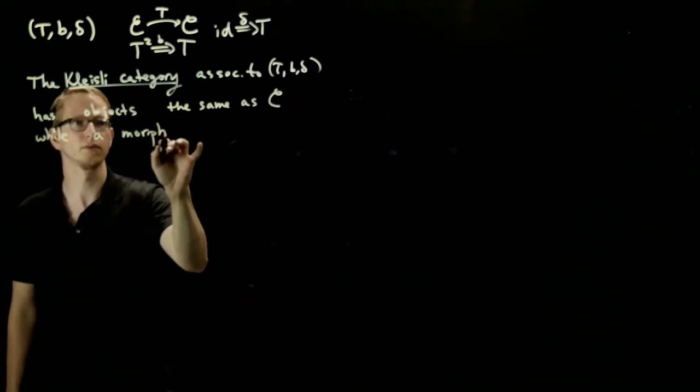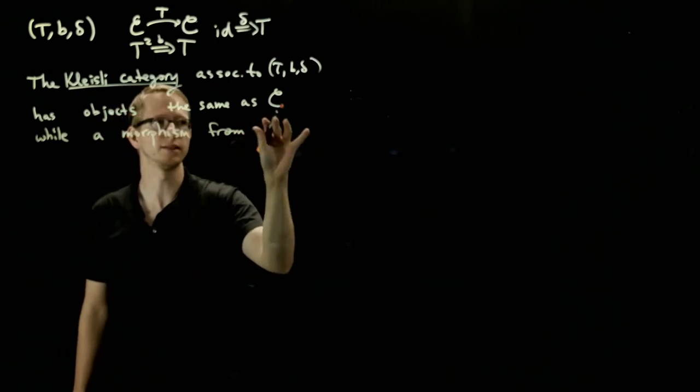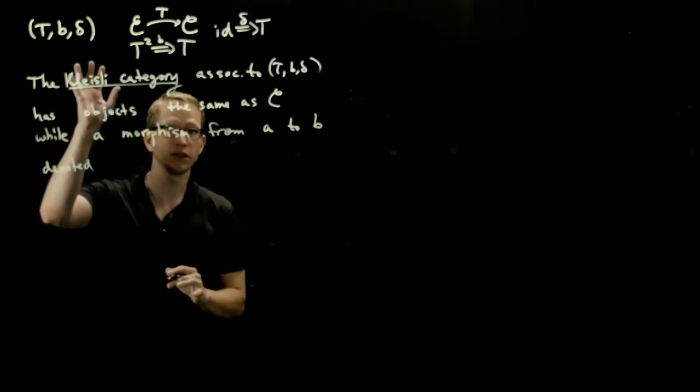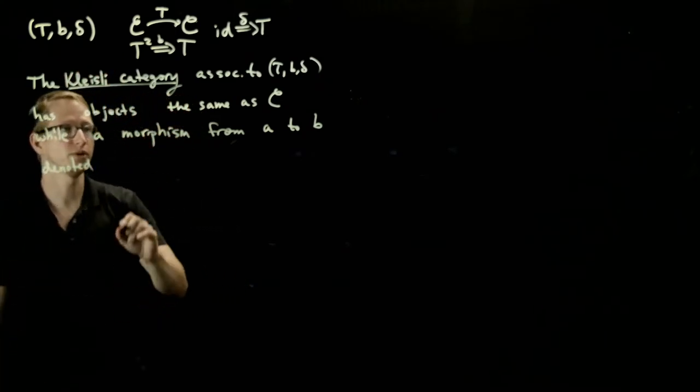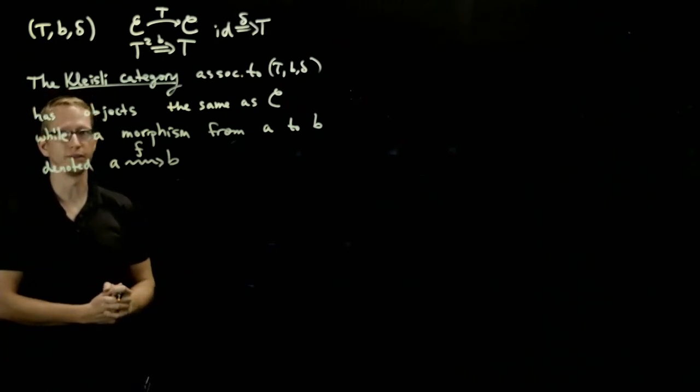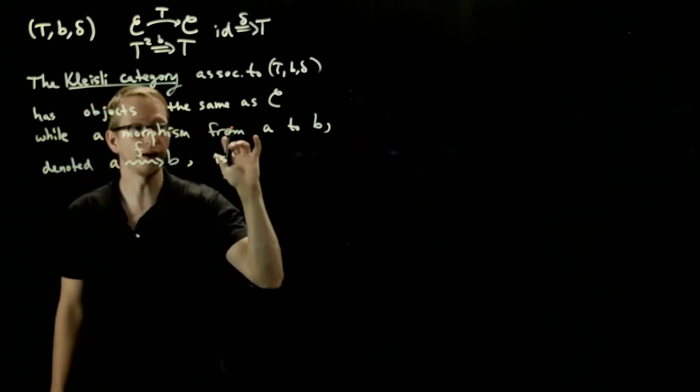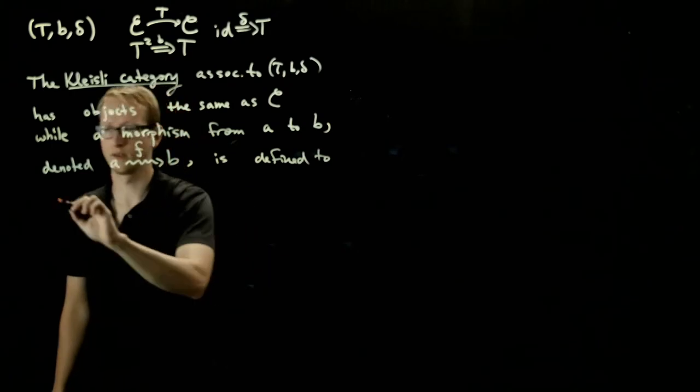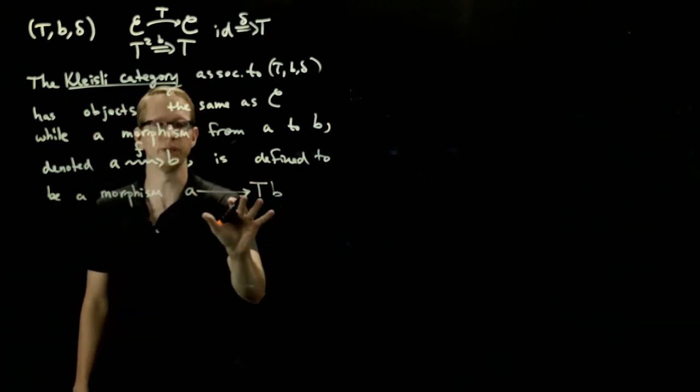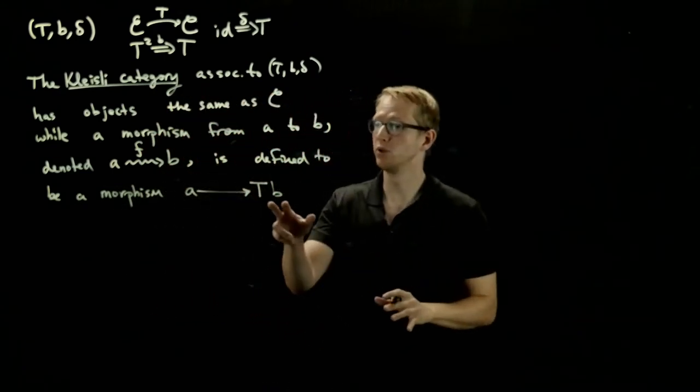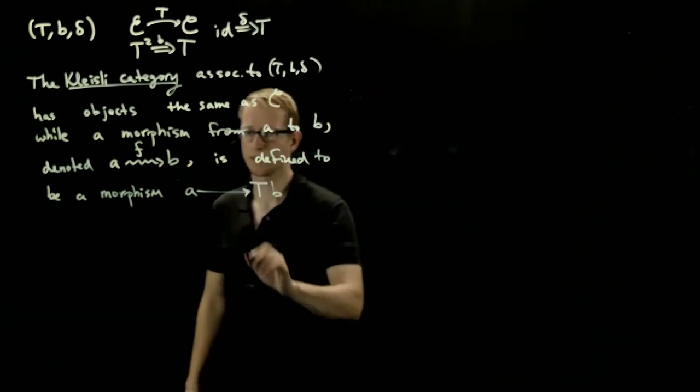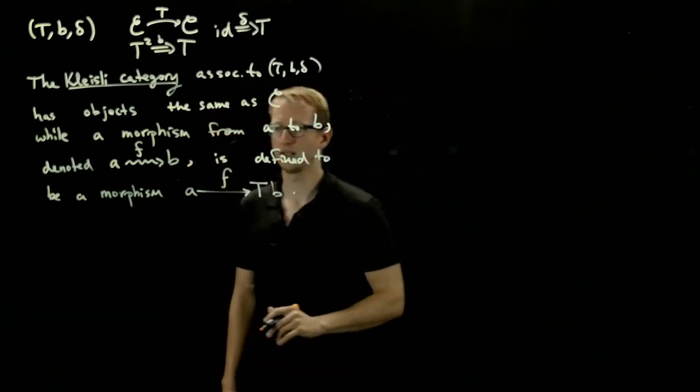A morphism from an object A to B, to distinguish between morphisms in the original category and morphisms in this Kleisli category, we'll use the following notation. Instead of drawing a straight arrow, we will draw a squiggly arrow from the source to the target. This is defined to be a morphism A to T applied to B. So this is now a morphism in our original category, but notice that the codomain or target of that morphism is not B itself, it's the functor T applied to B. Let's call this also F because that's what we mean by this notation.